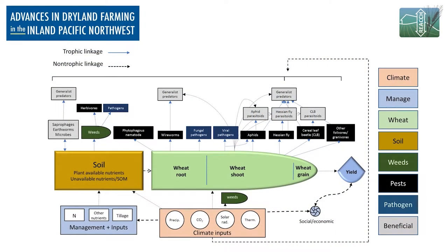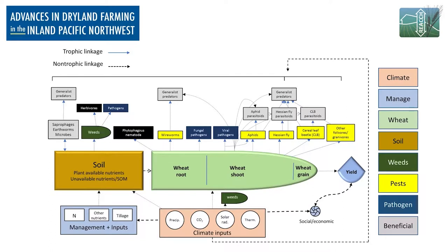The first diagram introduces the wheat system. You can see the soil and the wheat plant in the center, and above that are boxes representing the biotic factors that can influence production — mostly pests and diseases, but some beneficials are listed there. On the bottom are the management and climate inputs that influence productivity. Today's topic, highlighted here, are the insects we'll discuss this morning, but all the rest can be found in the advances book.